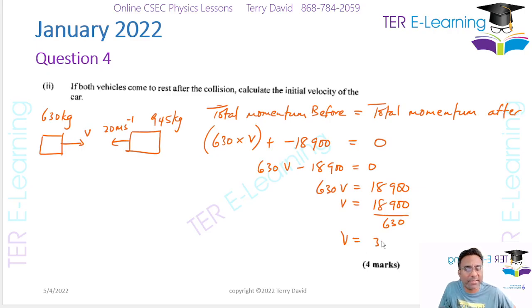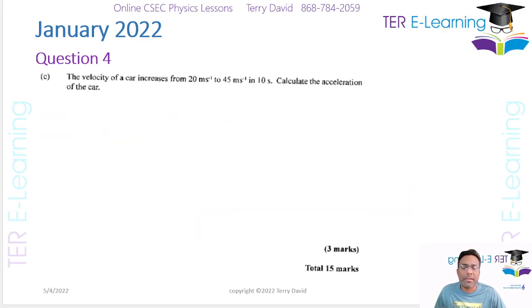I'm getting 30 meters per second. So that's the velocity of the car before. Now, they said the velocity of the car increases from 20 to 45 in 10 seconds. Calculate the acceleration of the car. Now, acceleration is given by V minus U divided by T. So that's your final velocity, which is 45, minus your initial velocity, which is 20, divided by 10.